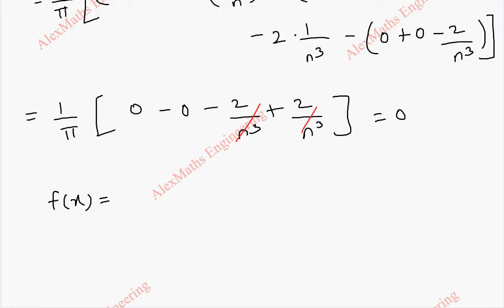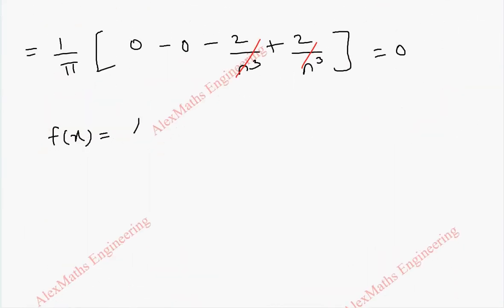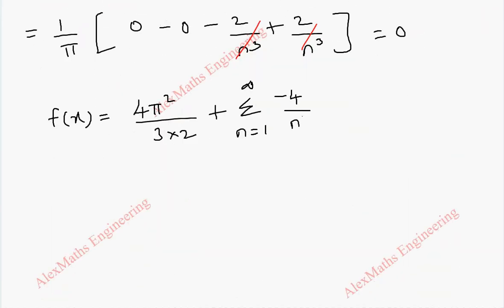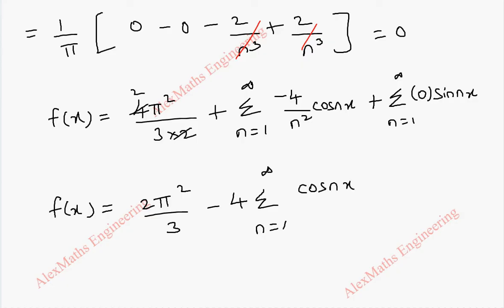Substituting into the Fourier series formula: f(x) = a₀/2 + Σaₙcos(nx). With a₀ = 4π²/3, a₀/2 = 2π²/3. With aₙ = -4/n² and bₙ = 0, the expansion becomes: f(x) = 2π²/3 - 4·Σ(n=1 to ∞) cos(nx)/n². This is our Fourier series expansion.